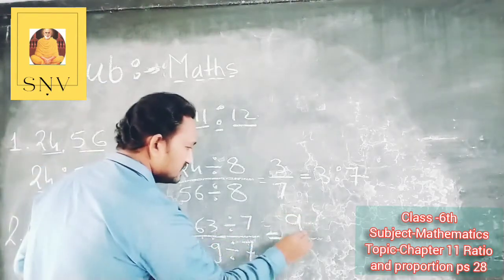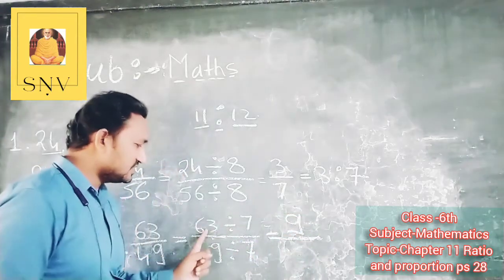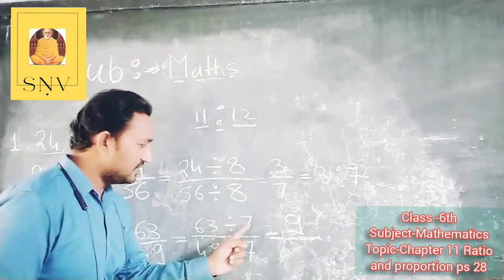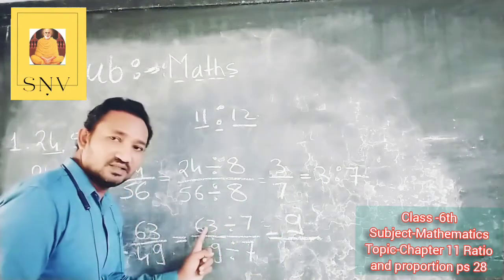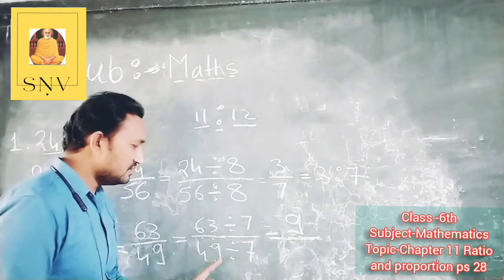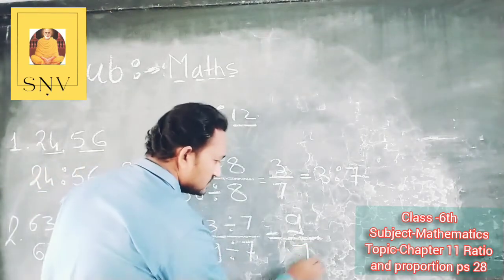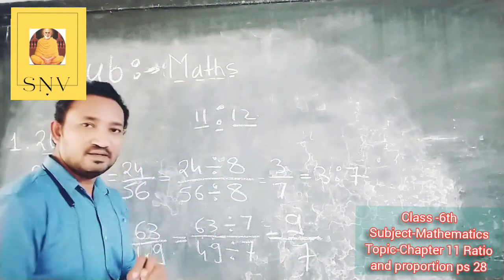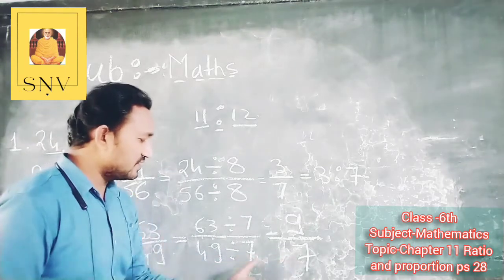We have 7 and 7. 7 nines are 63, 7 nines are 63. And 7 sevens are 49, 7 sevens are 49.